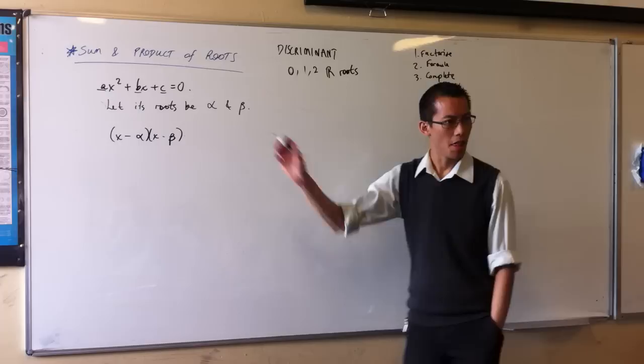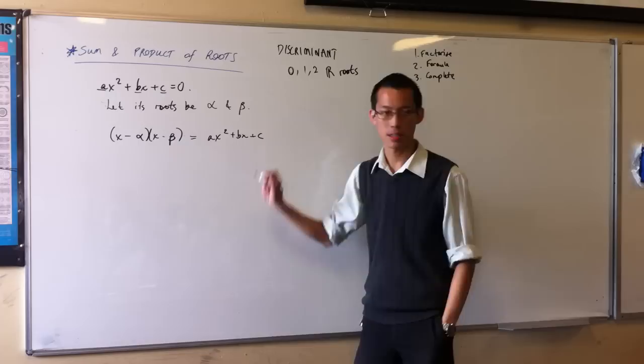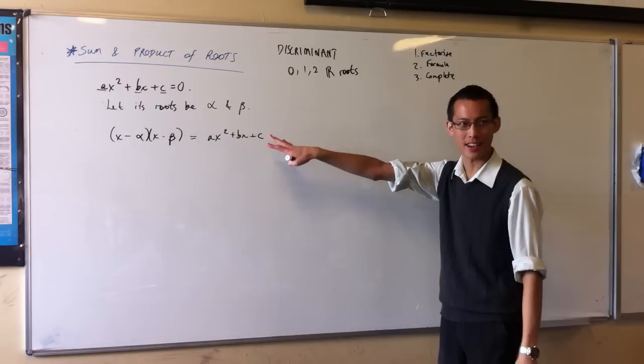That quadratic has roots at alpha and beta. Now, I want this quadratic to be equal to the one I started with, AX squared plus BX plus C. I want to approach the same quadratic from two different angles, as it were. This is from the general angle, and this is from the angle of what roots it has.